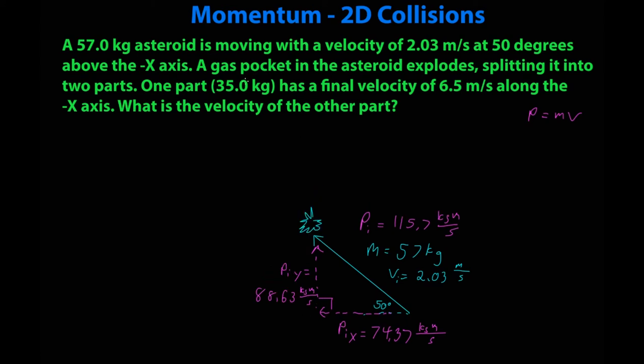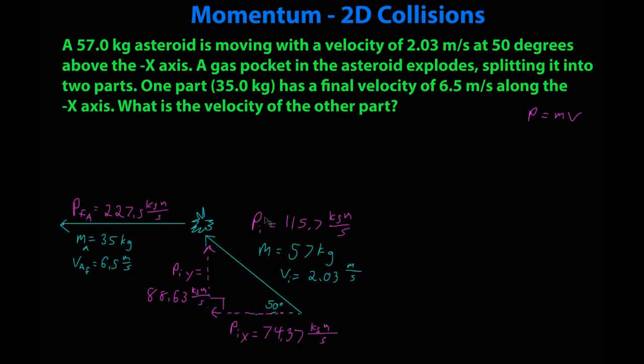Here is the explosion. The gas pocket in the asteroid explodes, splitting it into two parts. One part, 35 kilograms, has a final velocity of 6.5 meters a second along the negative x-axis. So, it flies directly this way. I'll call this object mass a, 35 kilograms, velocity a final 6.5 meters per second along the negative x-axis, which means momentum final a is 227.5 kgm/s. I'm going to move this over here so I can do a little work.